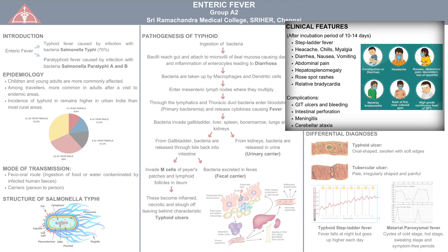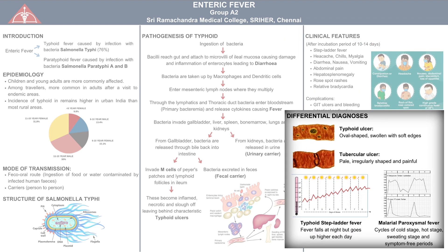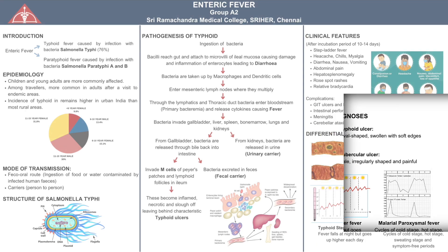GI ulcers, intestinal bleeding, perforation, meningitis and cerebellar ataxia are a few complications that may arise. It is important to know the difference between typhoid ulcers and tubercle ulcers for accurate diagnosis. Typhoid ulcers are usually oval-shaped and swollen with soft edges, whereas tubercle ulcers are pale, irregularly shaped and painful. Malaria can be ruled out if the fever shows a paroxysmal waxing and waning pattern, unlike typhoid fever which keeps increasing every day.